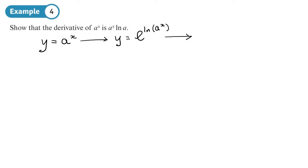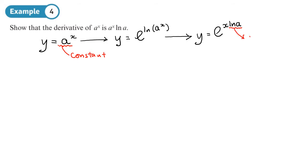We have x here as a power, and you know that the log of something to a power means that power can be written at the front. So the next step is y equals e to the x·log(a). Now, a is just a constant — it's not going to change. x and y are variables, but a isn't. So log(a) is also a constant.